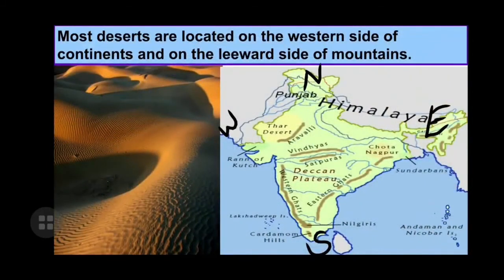Now let us see some more interesting features about deserts. Most deserts are located on the western side of continents and on the leeward side of mountains. On the leeward side, the region becomes very dry because the winds are sheltered by the mountains and do not blow properly. That is why most deserts are located on the western side of continents and on the leeward side of mountains.